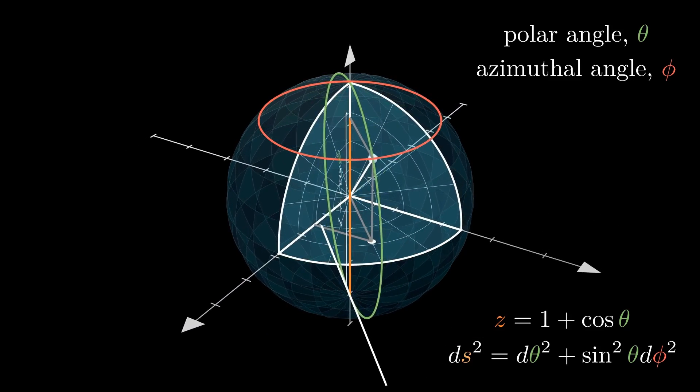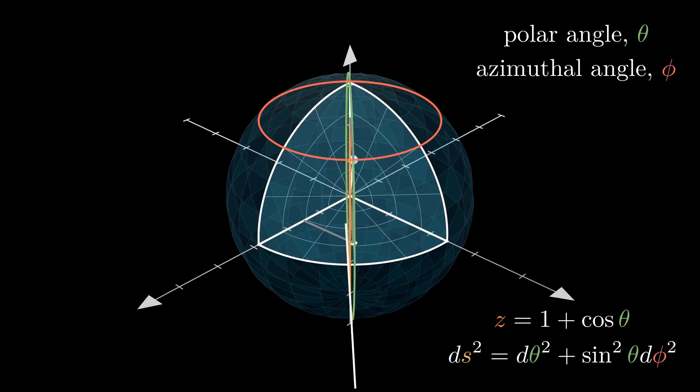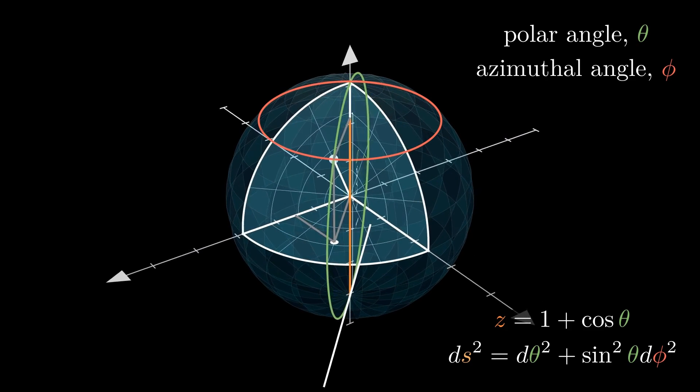Likewise, the square of the infinitesimal arc length can be found by considering small variations in theta and phi, and applying the Pythagorean theorem.